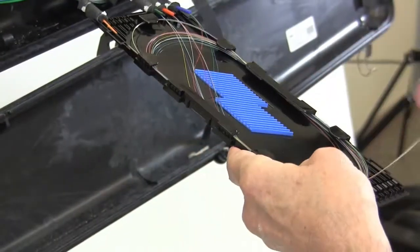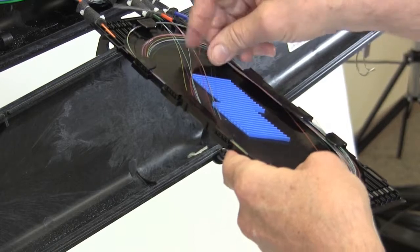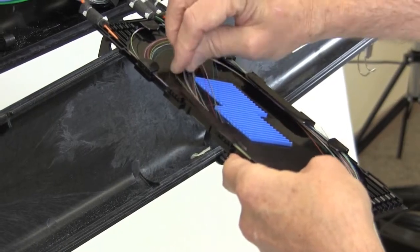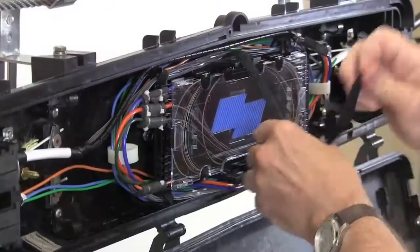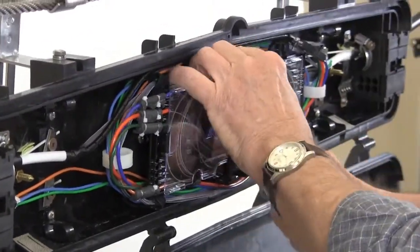Use approved methods for cleaning and splicing the fibers. After splicing is complete, install the clear cover and then secure the tray using the hook and loop strap.